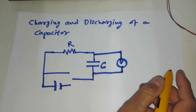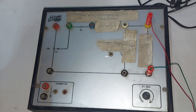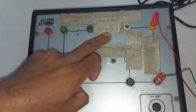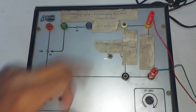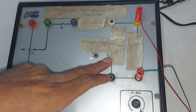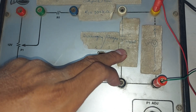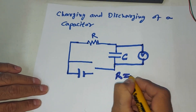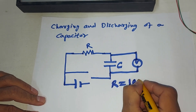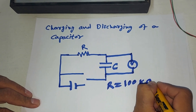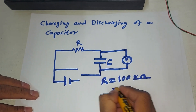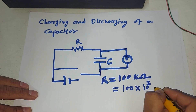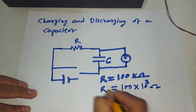Here in this case you can see this is our circuit and here we have the resistor equal to 100 kilo ohm. R is equal to 100 kilo ohm, which if we convert into ohm is 100 multiplied by 10 raised to power 3 ohm. So this is the value of the resistor.